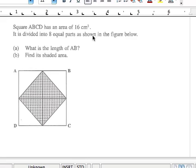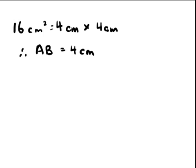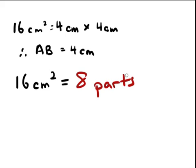8 equal parts. Now, square ABCD has an area of 16 cm squared. It is divided into 8 equal parts. Let me just draw this out for you so that it becomes very obvious. Area of square ABCD is 16 cm squared. And this equals to how many parts? 8. 8 parts. Can you see what I'm trying to say here? I'm trying to say 8 units equals to 16 cm squared.